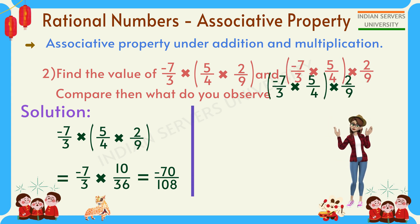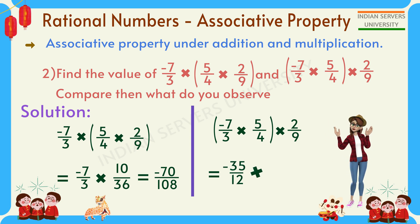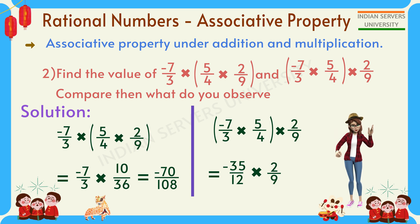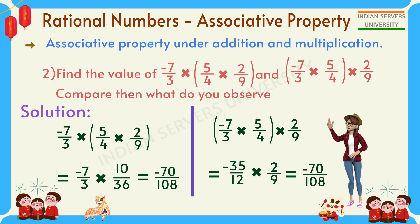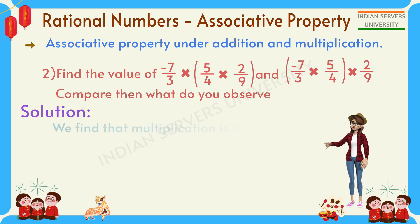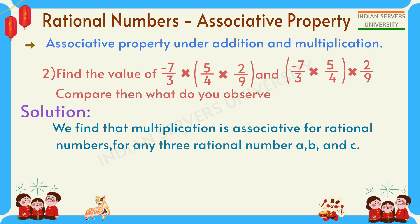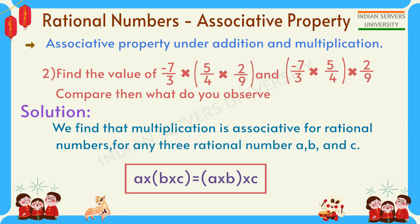For the other side, -7/3 × 5/4 first: (-7) × 5 = -35, 3 × 4 = 12. So -35/12 × 2/9. Multiplying: (-35) × 2 = -70, 12 × 9 = 108. Both give -70/108. We find that multiplication is associative for rational numbers. For any three rational numbers a, b, and c: (a × b) × c = a × (b × c).